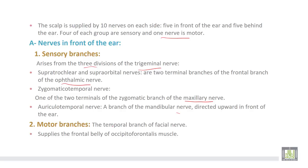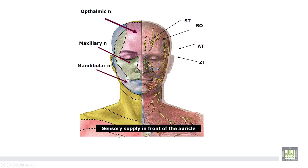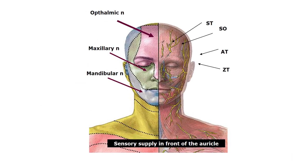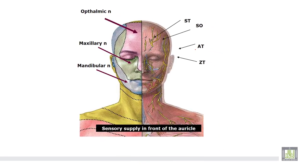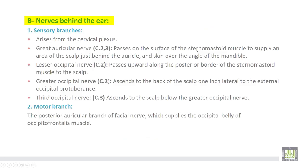Number one motor branch is the temporal branch, which supplies the frontal belly of the occipitofrontalis muscle. The nerve supply of the scalp in front of the ear consists of: supra-trochlear, supra-orbital, zygomaticotemporal, and auriculotemporal nerves. The nerves behind the ear are sensory branches that arise from the cervical plexus.